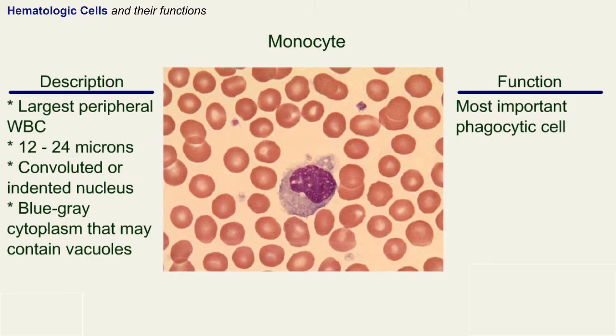Monocyte. Monocytes are the largest peripheral white blood cells, 12 to 24 microns in diameter, with a convoluted or indented nucleus. They have a blue-gray cytoplasm that may contain vacuoles. Monocytes are the most important phagocytic cell.